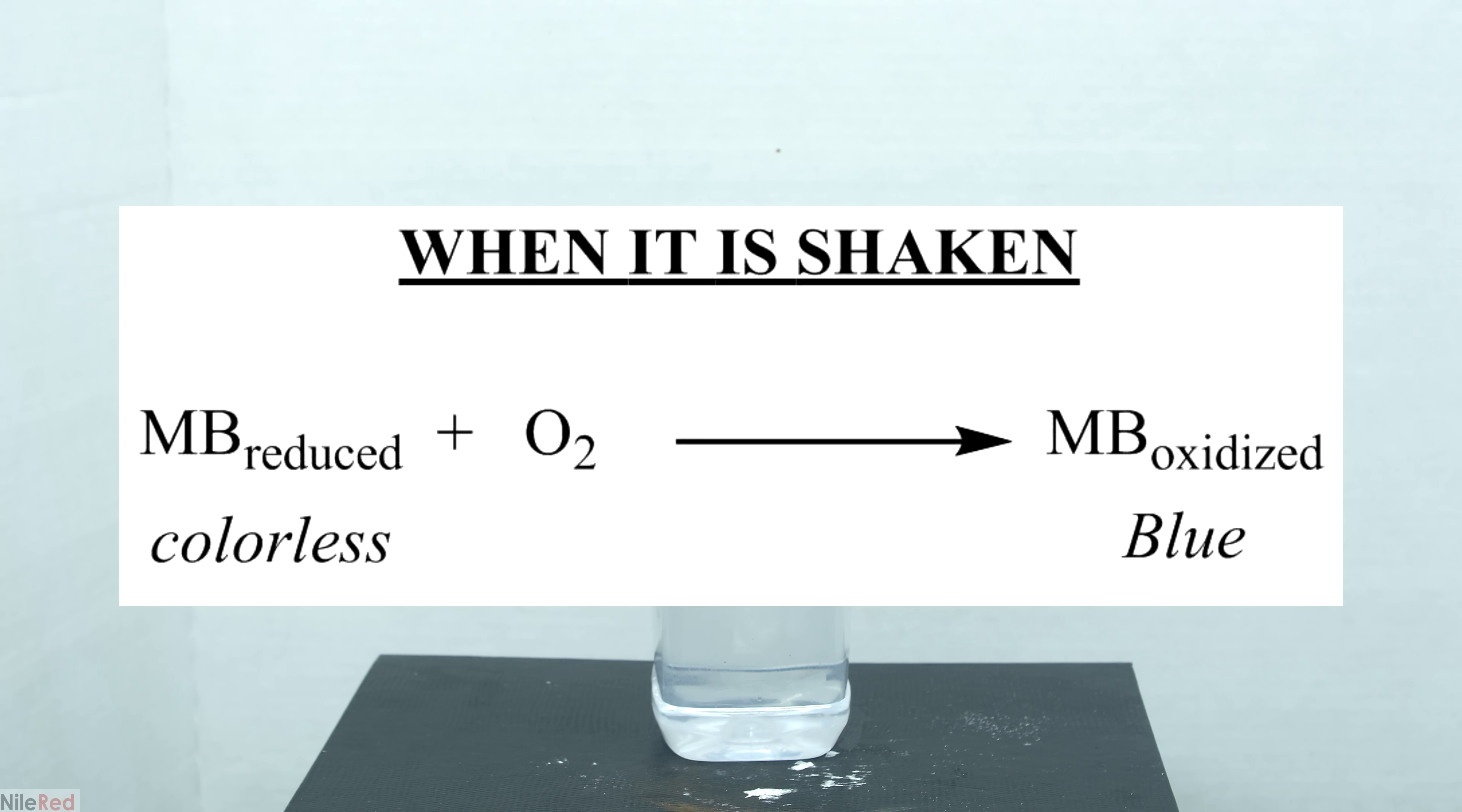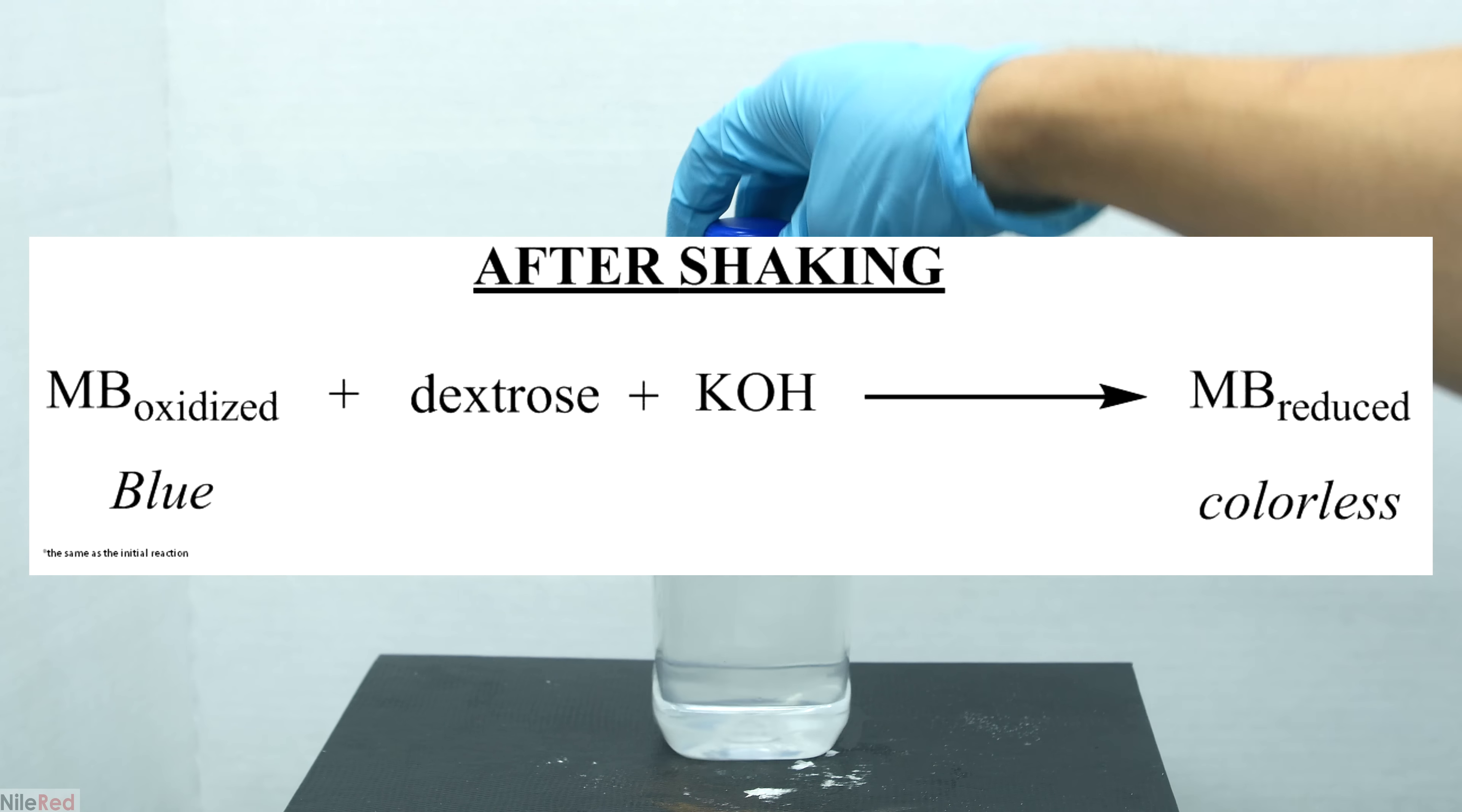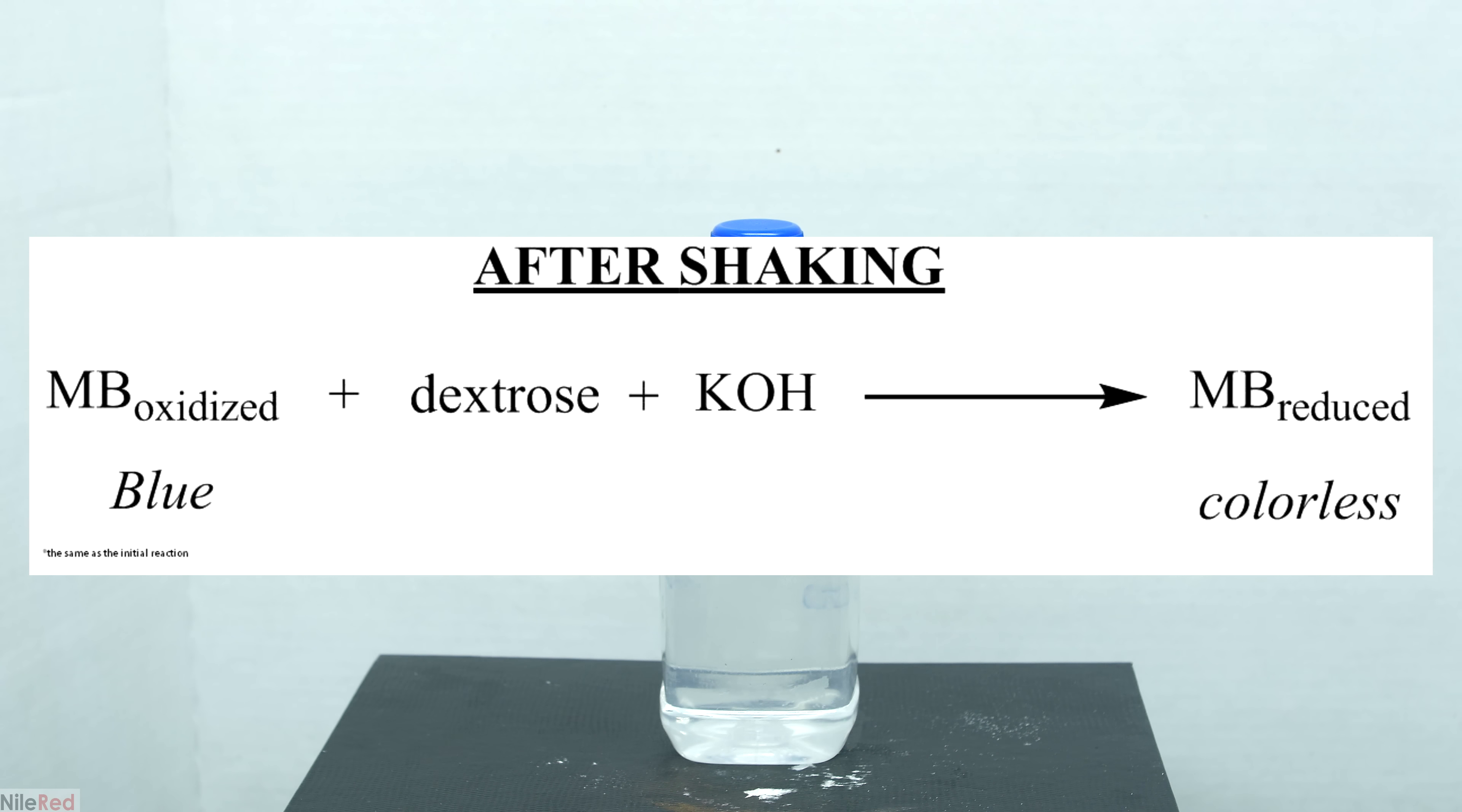When we shake the bottle we introduce oxygen gas into the solution and this is able to oxidize the methylene blue back to its colored form. Once we stop shaking the bottle though we stop introducing oxygen and the reducing effects of the dextrose and potassium hydroxide slowly take over and convert it back to its colorless form.